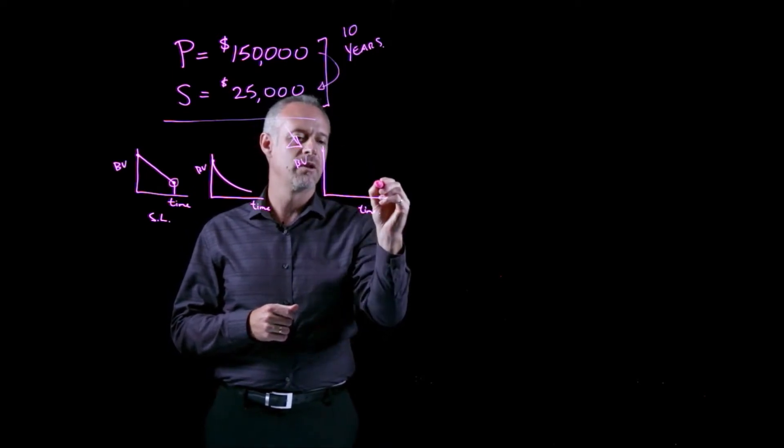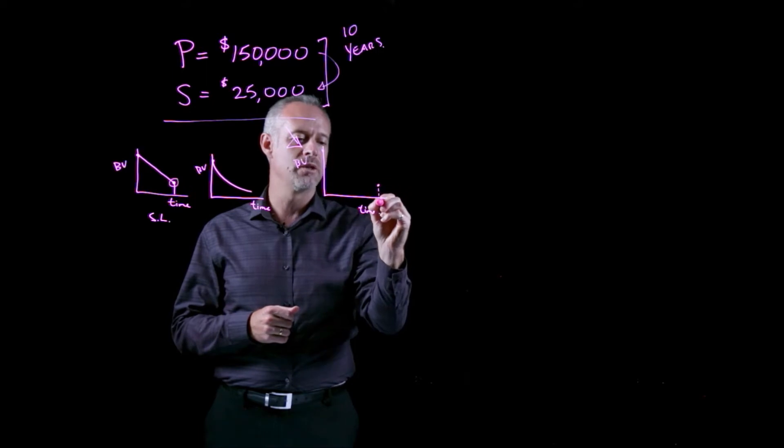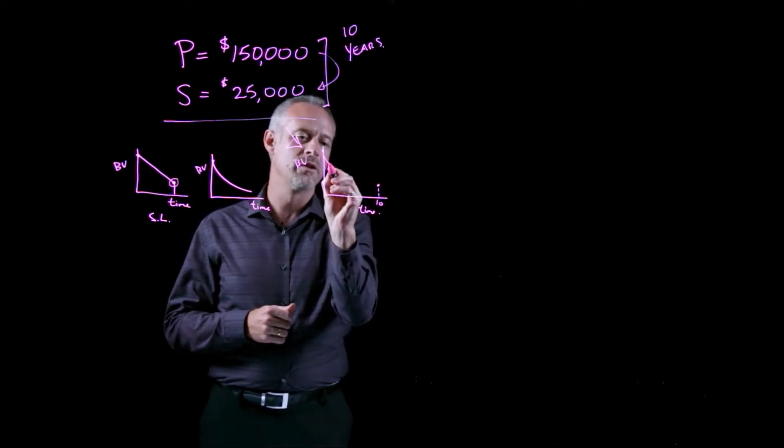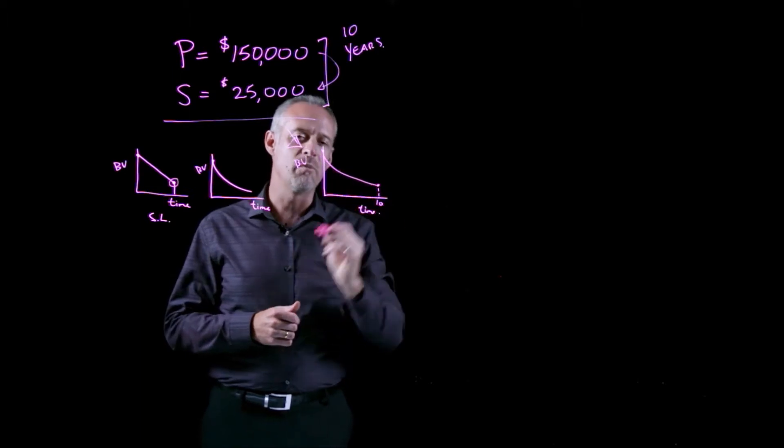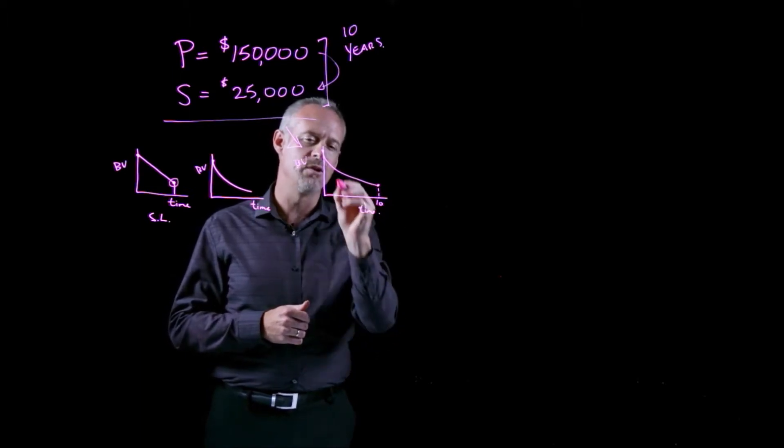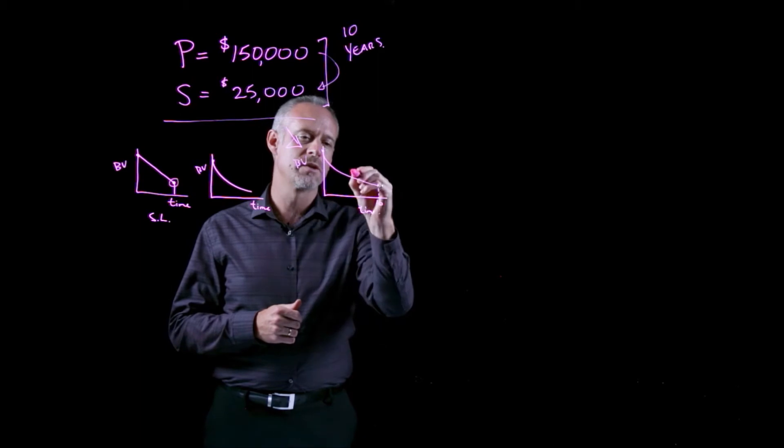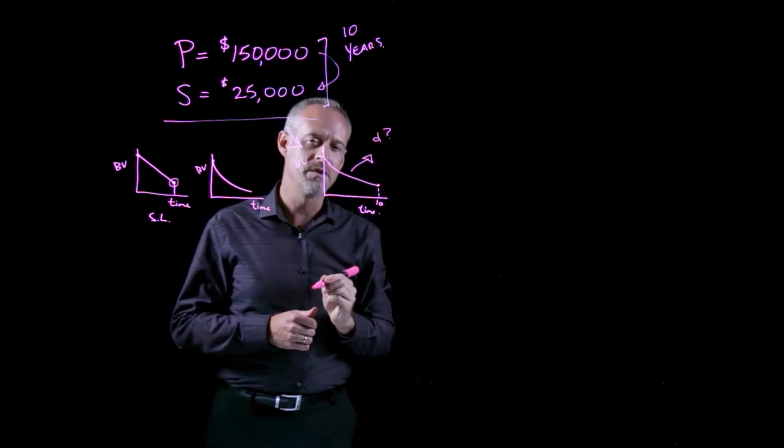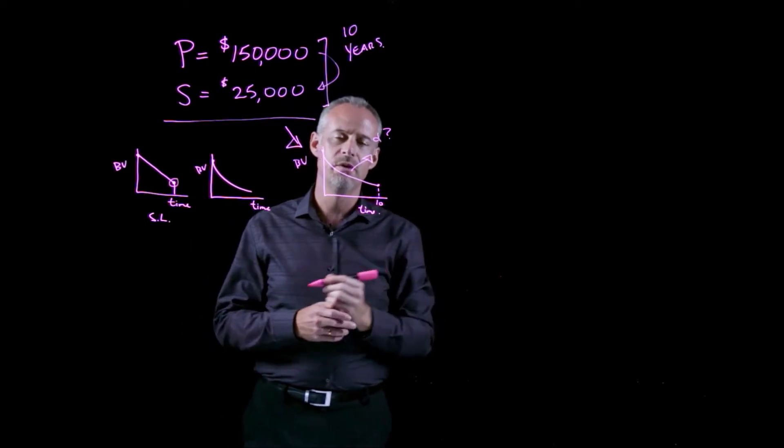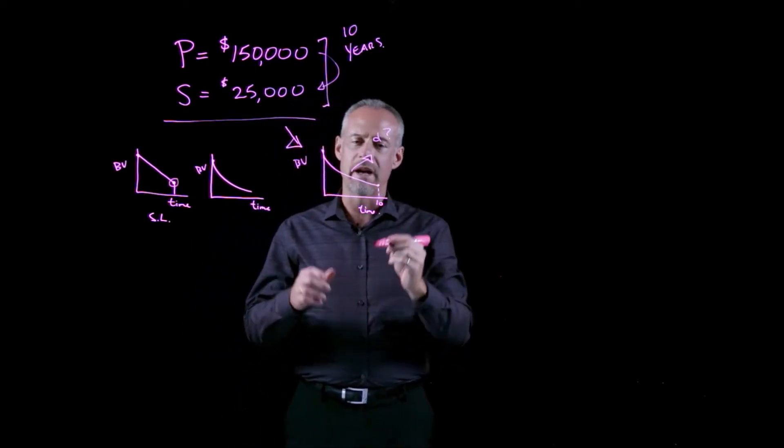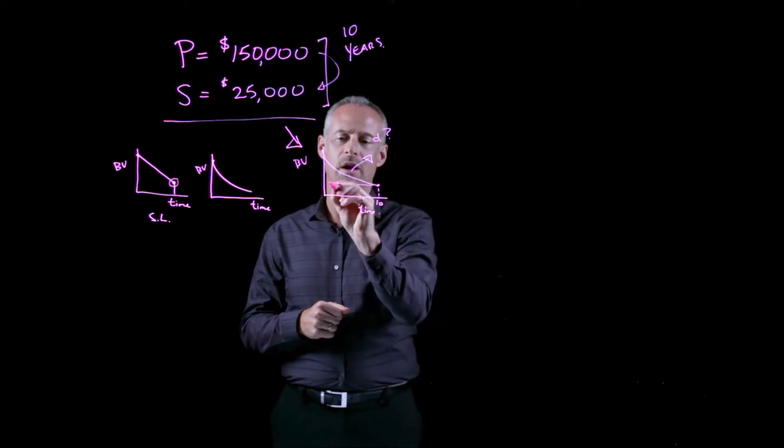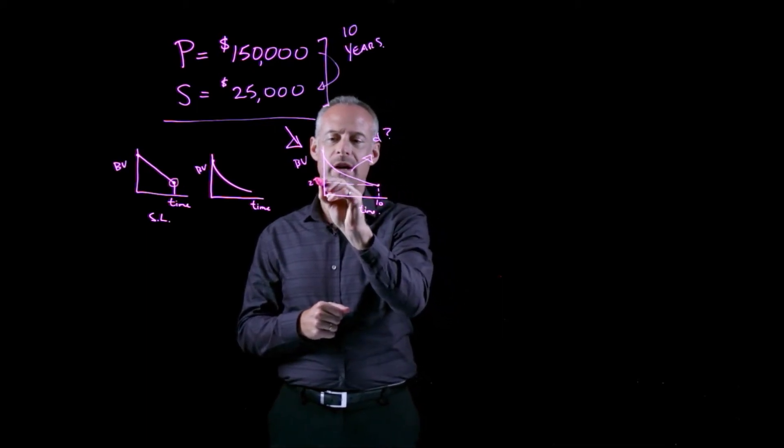So we have a starting point, we have an ending point at 10 years, we know that the shape of the loss in value will look something like this. And the question asks, what is little d? So what is the depreciation rate that allows us to, at the end of 10 years, have a book value of exactly $25,000?